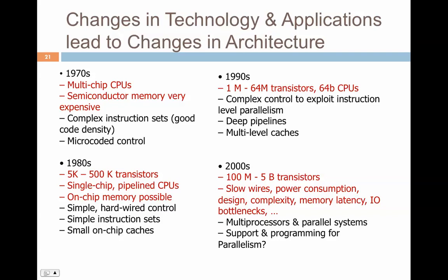Looking at the broader history of changes in technology and architecture: in the 1970s, the focus was on multi-chip CPUs. Semiconductor memory was very expensive, so we looked at complex instruction sets — complex instructions made storage simpler. We had microcoded control to execute instructions. Coming to the 1980s, transistor counts grew from 5K to 500K; we saw single-chip pipelined CPUs and the first small on-chip caches became possible.